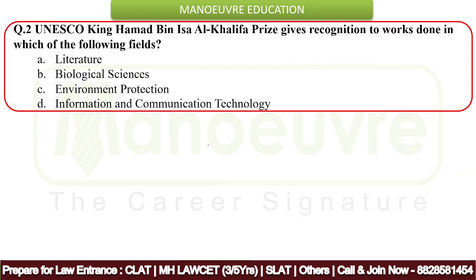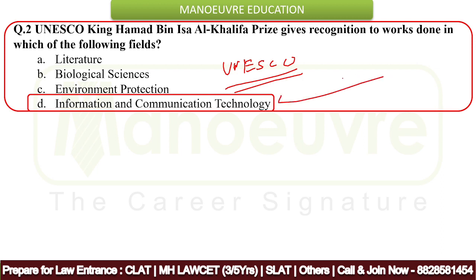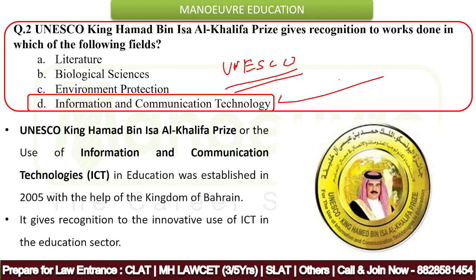Next question about UNESCO — the full form is United Nations Educational, Scientific and Cultural Organization. The question is: the UNESCO King Hamad bin Issa Al Khalifa prize gives recognition to works done in which field? The correct answer is information and communication technology — ICT, option D. This prize was established in 2005 with support from the Kingdom of Bahrain, and it gives recognition to the innovative use of ICT in education.